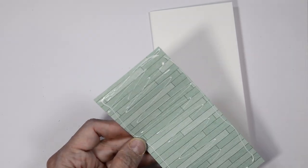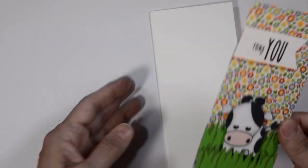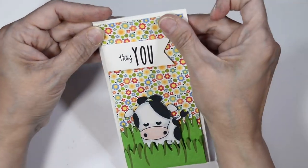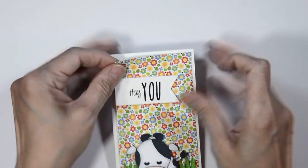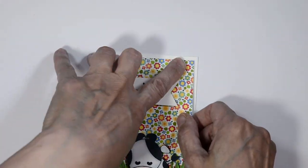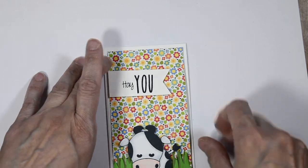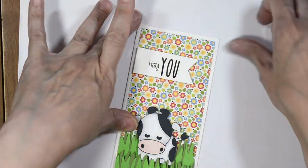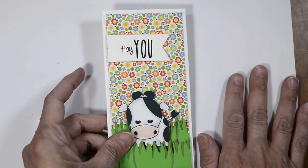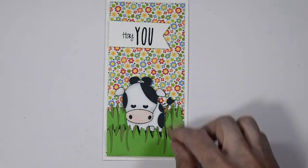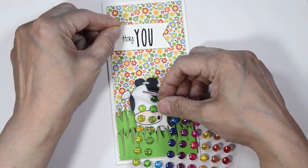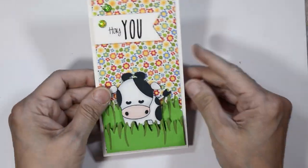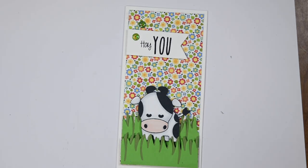Now I'm going to adhere this card panel to my card base and I've trimmed this so that I have a nice little border all the way around our card front. Once I have this on here centered, our card is basically complete. At this point if you want you can add embellishments or not so I'm going to add some glitter embellishments really quickly here and call it done.